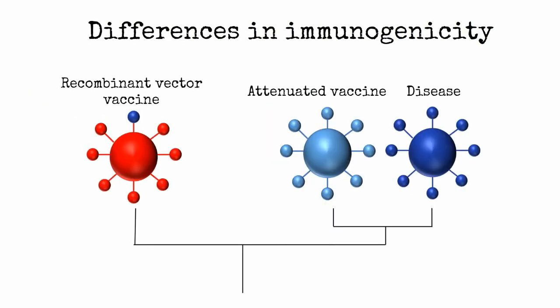In addition to the challenge of cross-immunity, recombinant vector vaccines may not be as immunogenic because they only contain one or a few antigens from the wild type disease. Live attenuated vaccines are so similar to the wild type disease that they likely induce more complete immunity.